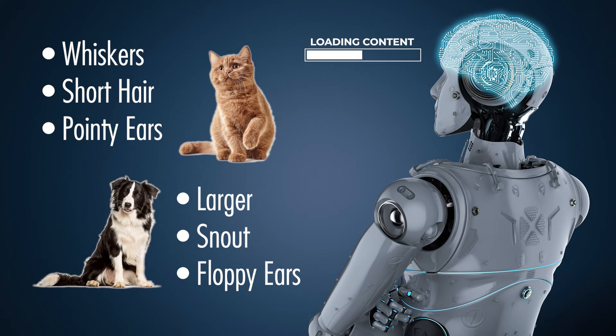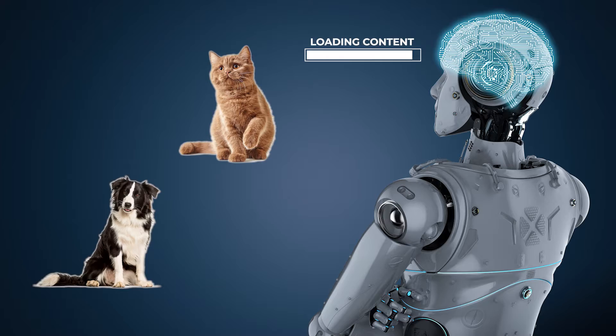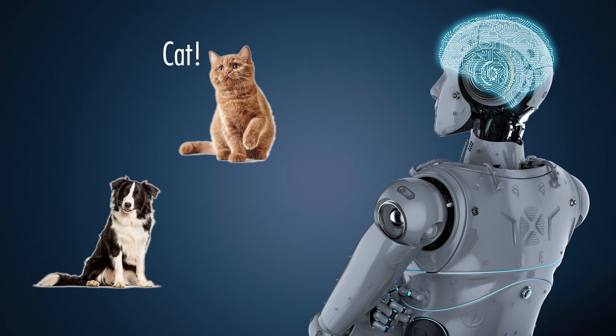It starts being able to distinguish between the two creatures. The computer program takes all of the patterns that it develops while learning in order to apply that and decide whether a creature is a cat or a dog.